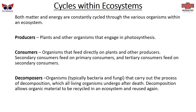Ecosystems have cycles within them because matter and energy are both conserved — they can neither be created nor destroyed, only changed. Because of that, matter and energy are constantly cycled through all the organisms in an ecosystem. Generally, you have three kinds of organisms within an ecosystem through which matter and energy pass.